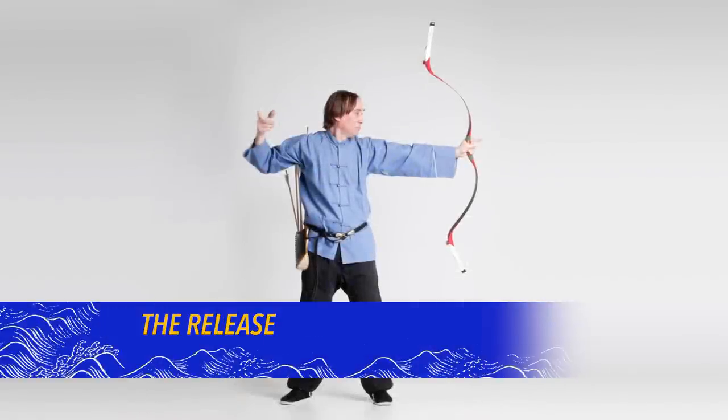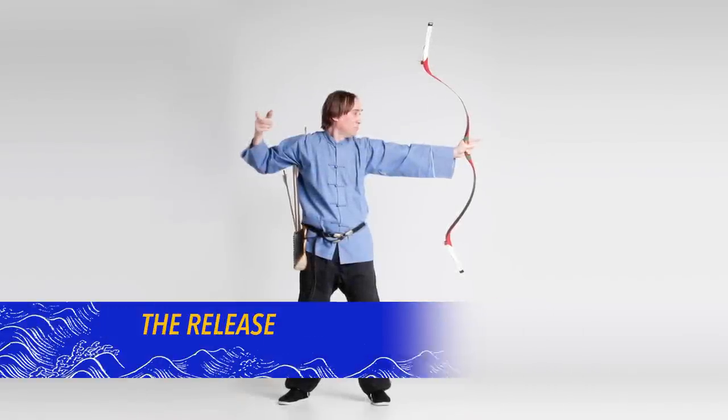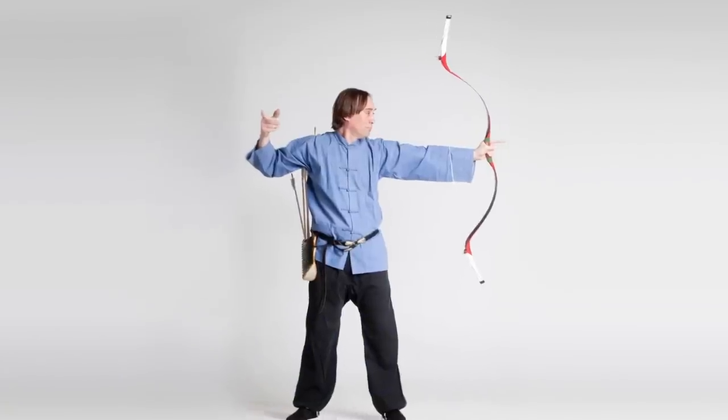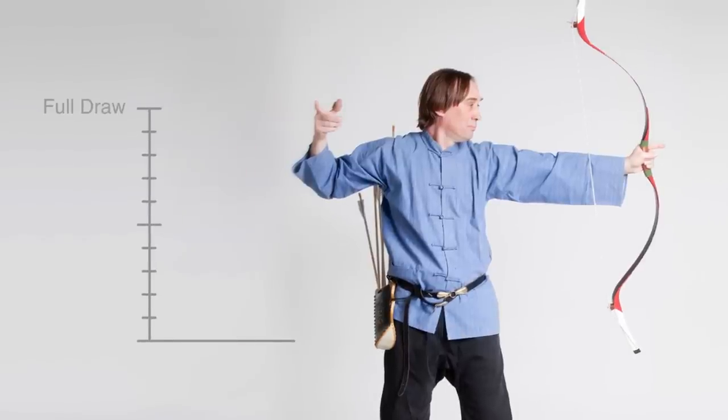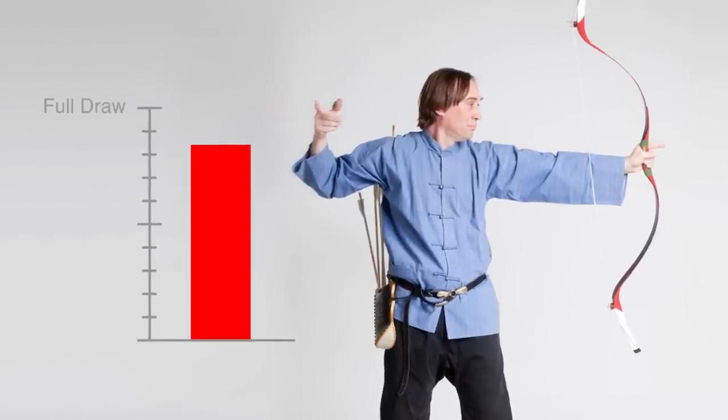Having reached full draw, release the arrow at the target, neither early nor late. An early release is one when the arrow is loose before the full draw is reached. In other words, rushing the shot.